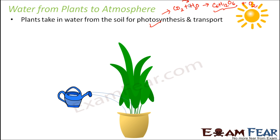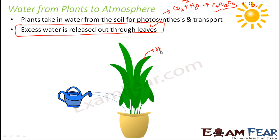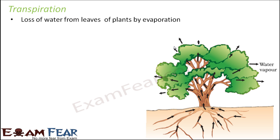Having the right amount of water within any living organism is a must — you cannot have excess or insufficient water. So the excess water is released out through the leaves of the plant into the atmosphere as water vapor. This process is called transpiration — the loss of water from leaves of plants by evaporation.